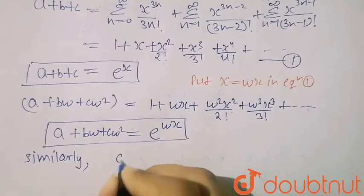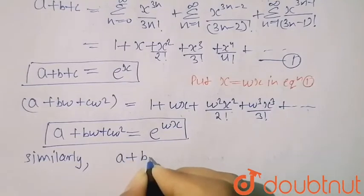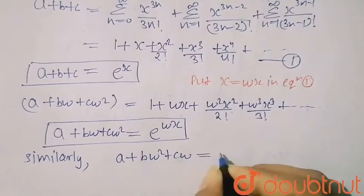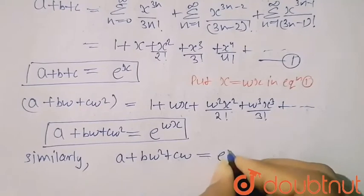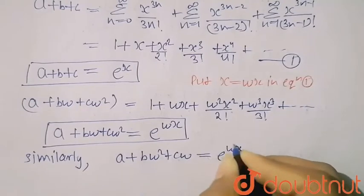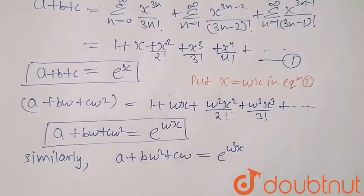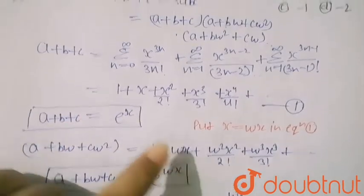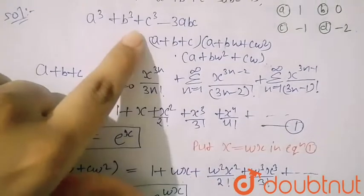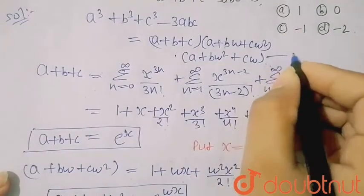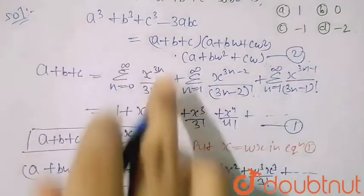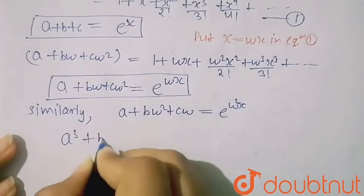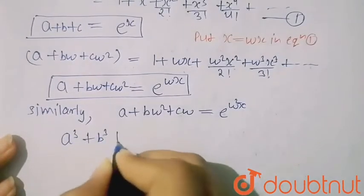Similarly, a+bω²+cω = e^(ω²x). Now we put these three values into our factored expression.